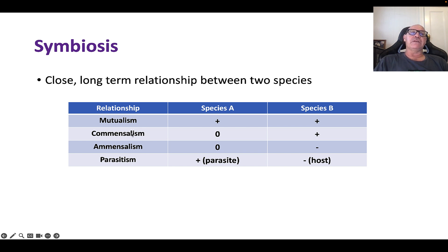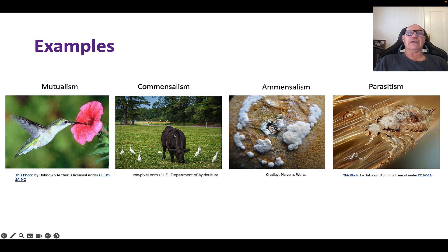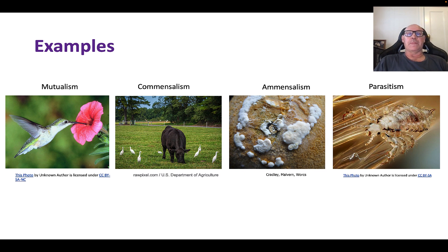Commensalism and amensalism both involve one species that is not affected. With commensalism, the other species benefits. The classic example is the cattle egret: egrets live in paddocks with cows, and as the cow walks through the grass, bugs get disturbed and fly up, which the egrets eat. The egrets benefit from the relationship, but the cow receives no benefit and is not harmed — so it's commensalism.